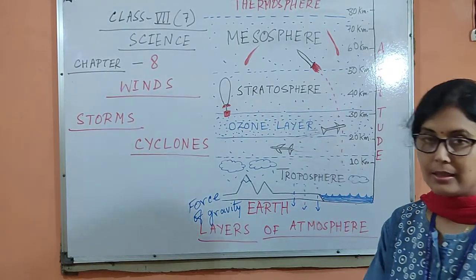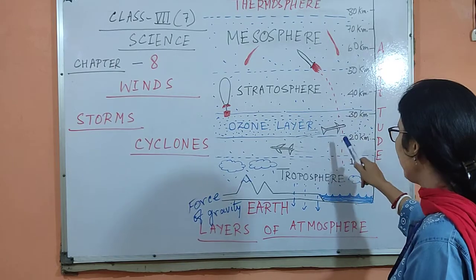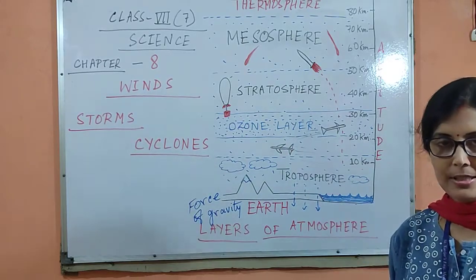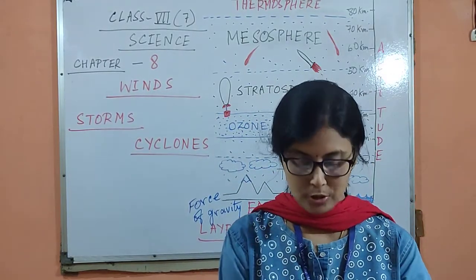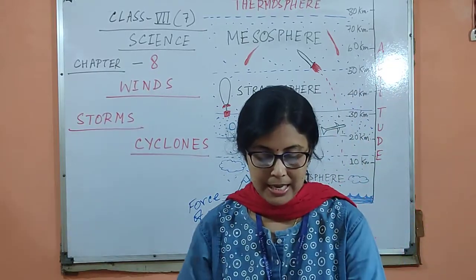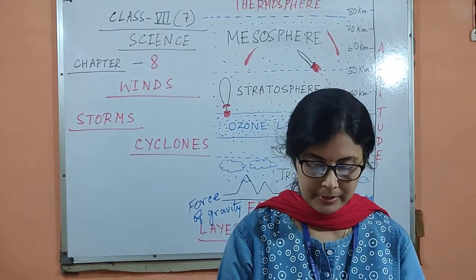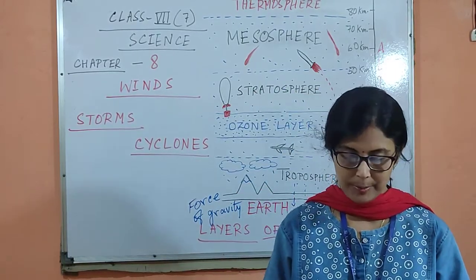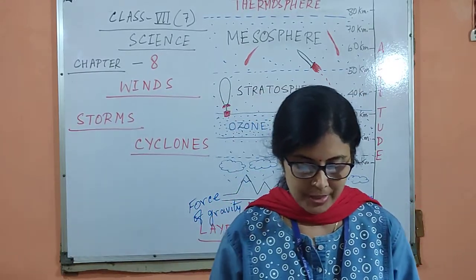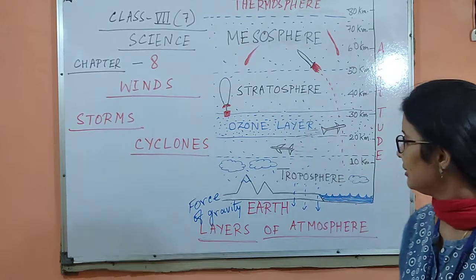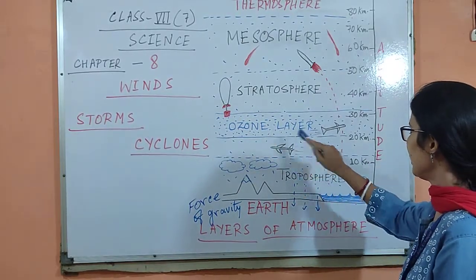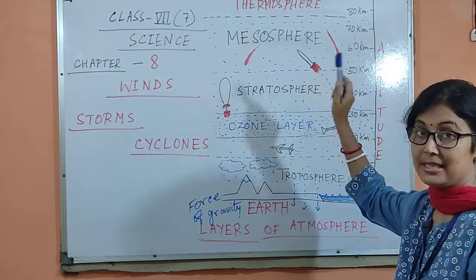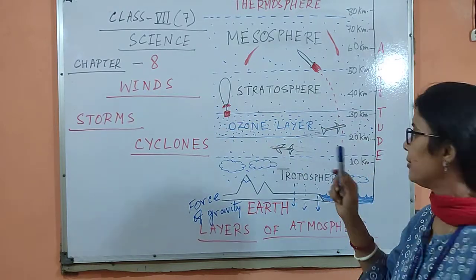The next layer, from above 15 km to 50 km, is the stratosphere. Stratosphere is a very important layer. In this layer there is less water vapor and the temperature is higher than in the troposphere. Most importantly, in this layer there is the ozone layer. Supersonic jet aircraft and other supersonic aircraft fly in this layer, and hot air balloons are also seen here.